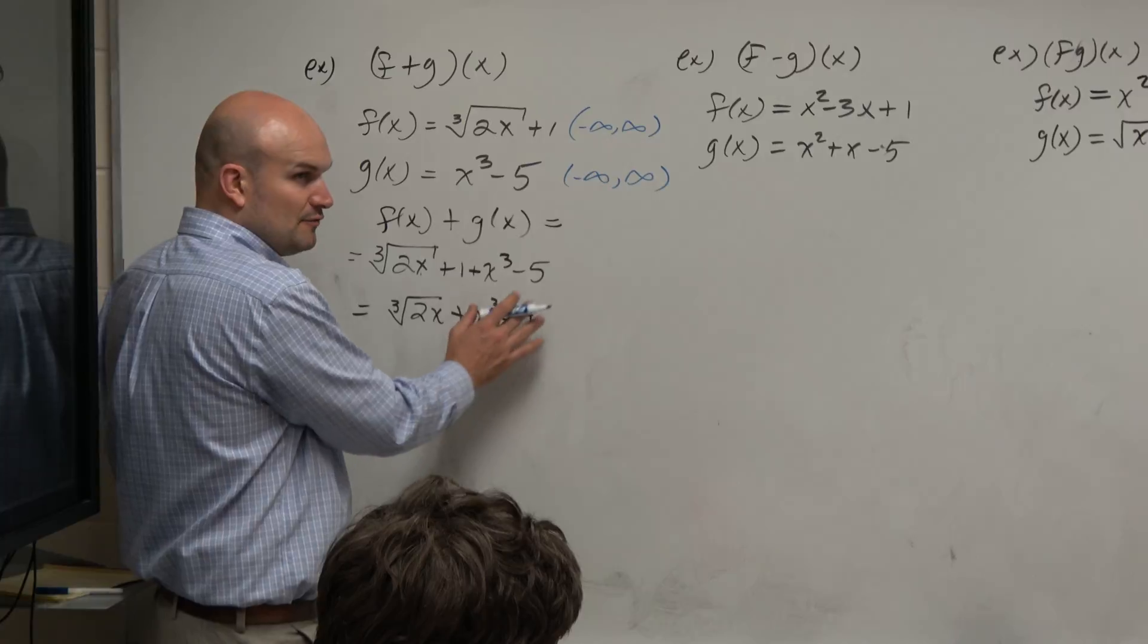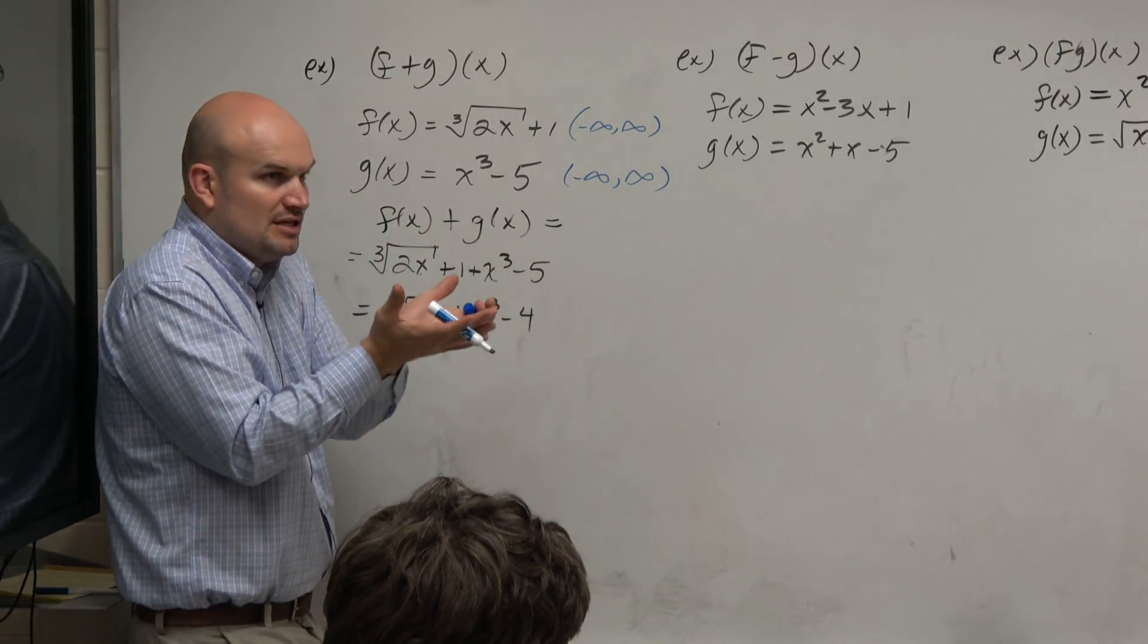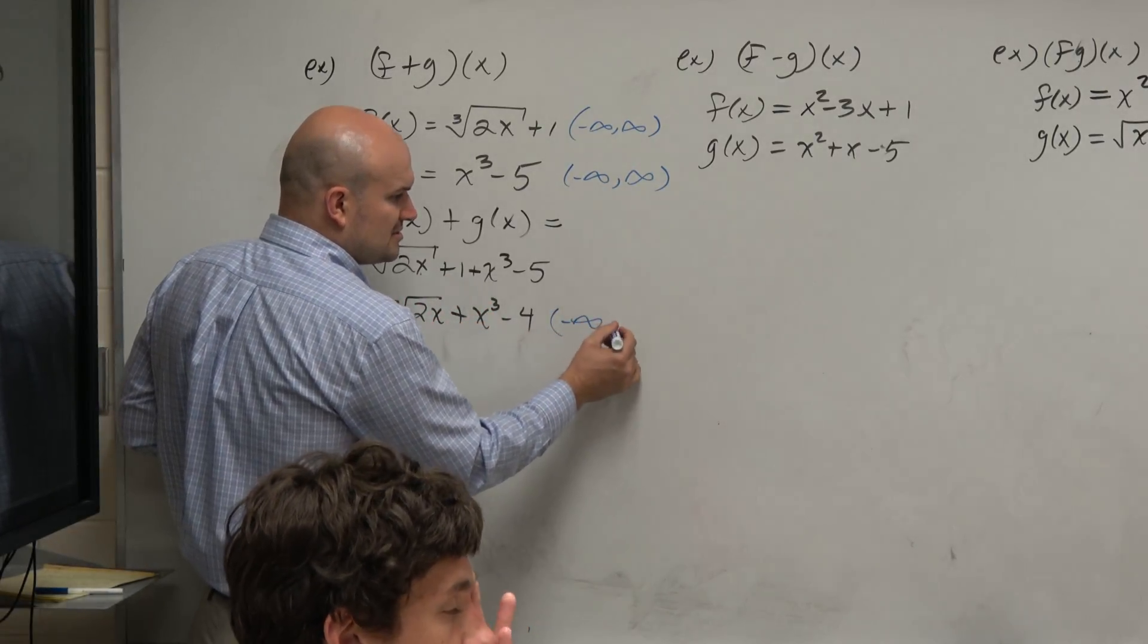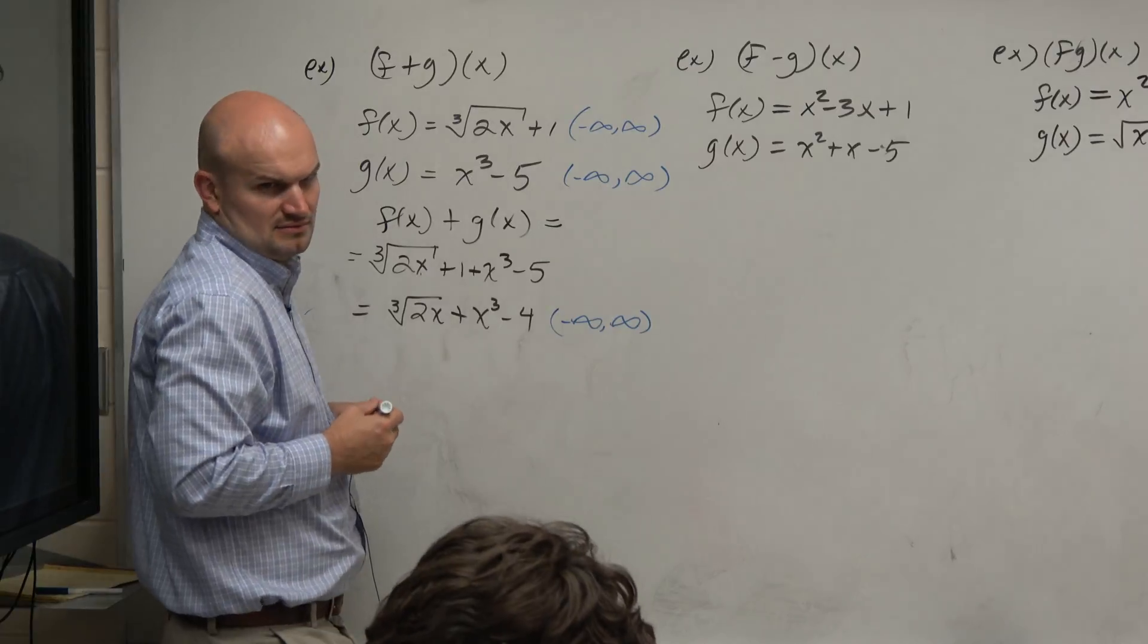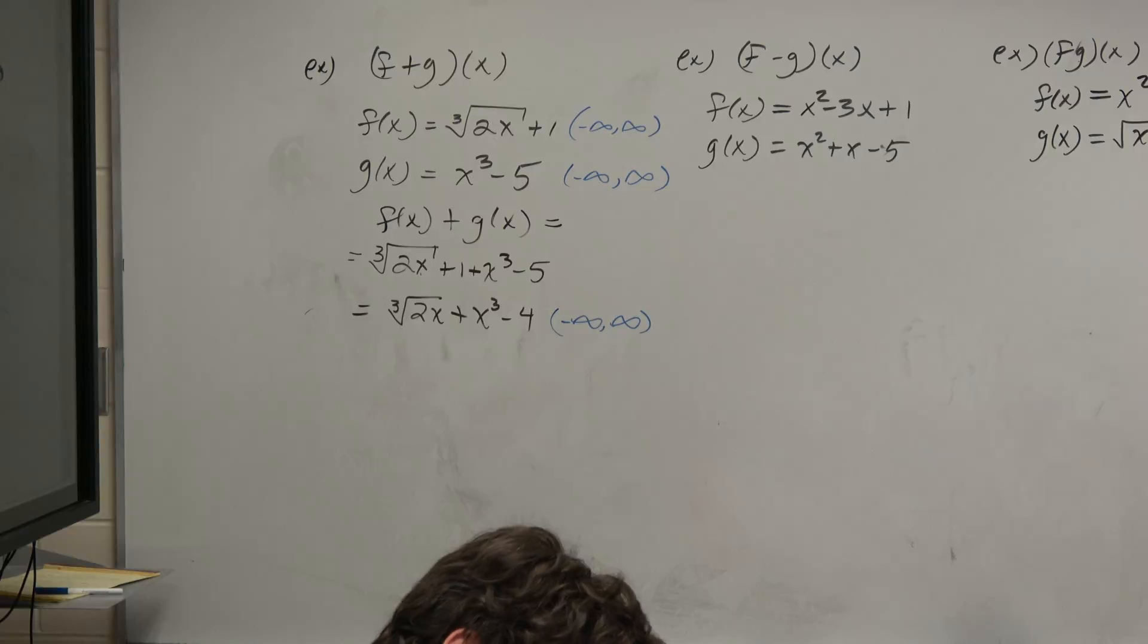So doesn't it make sense, guys, if we add these, just combine them together, that your domains are just going to be combined together? Right? So the domain is pretty obvious here. It's actually just all real numbers. Right? I mean, it kind of looks confusing, but it's really nothing crazy. Just combining them.